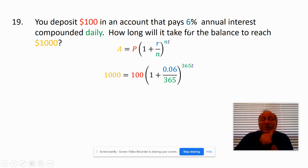My rate is 0.06 divided by 365 because there's 365 days in a year. So basically my rate turns out to be 1.00016. I'm going to do it 365 times each year.